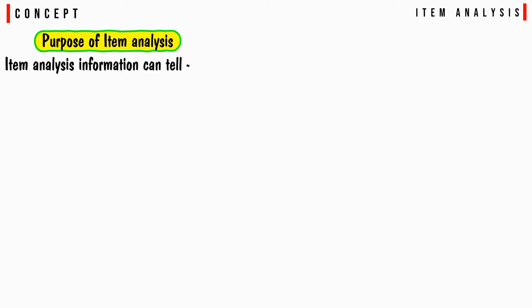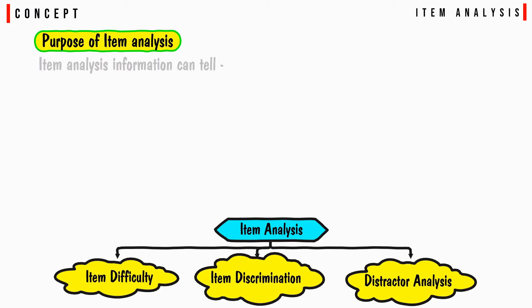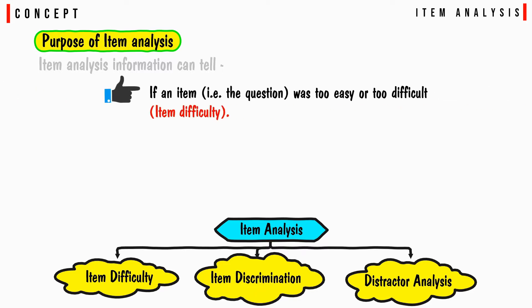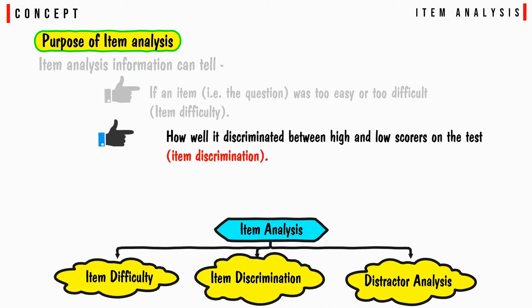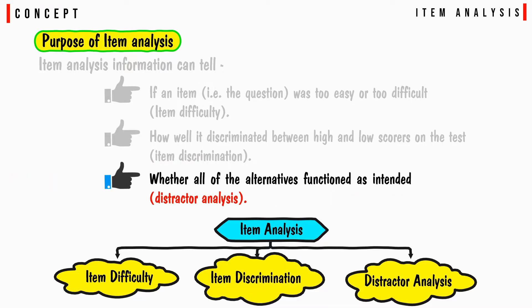Item analysis information can tell us about three things: item difficulty, item discrimination, and distractor analysis. Item difficulty refers to whether a question was too easy or too difficult. Item discrimination describes how well it distinguishes between high and low scorers on the test. Distractor analysis examines whether all the alternatives functioned as intended.